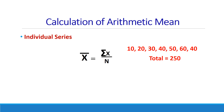This 250 has to be divided by the number of items in the series — that is 1, 2, 3, 4, 5, 6, 7. So there are 7 items in the series. 250 divided by 7 gives the answer 35.71, which is the arithmetic mean of the series.